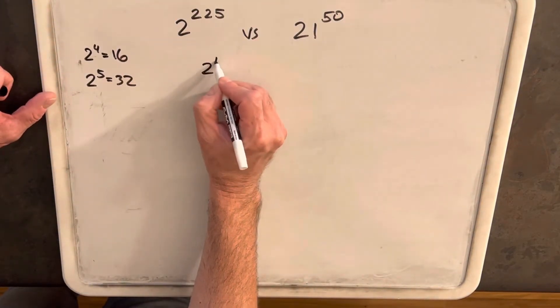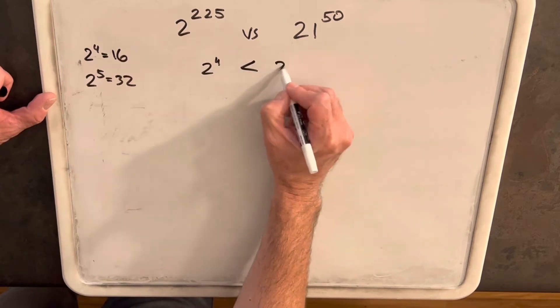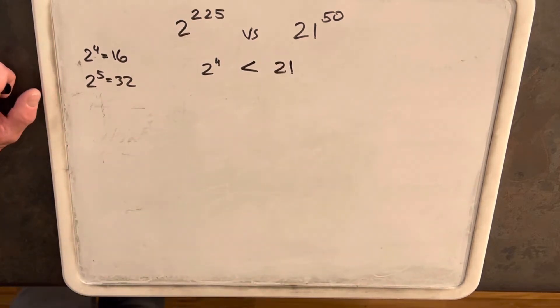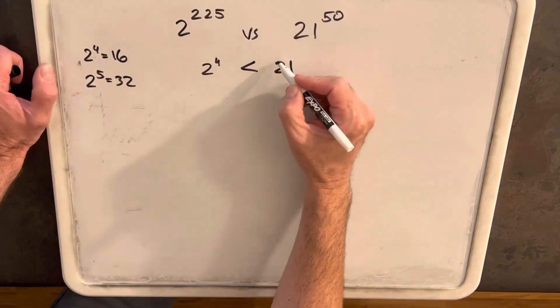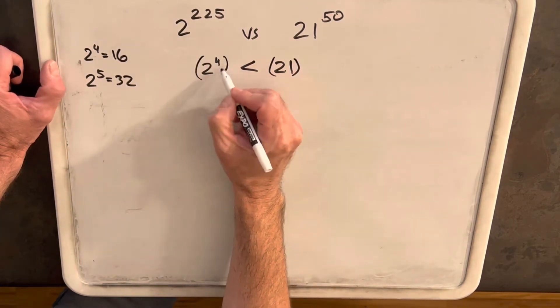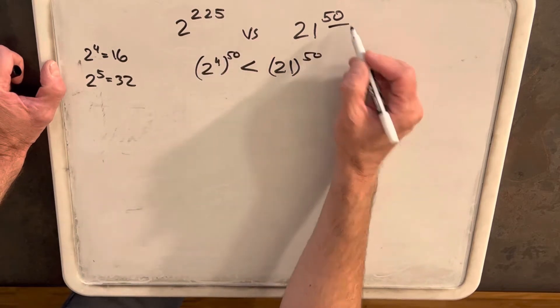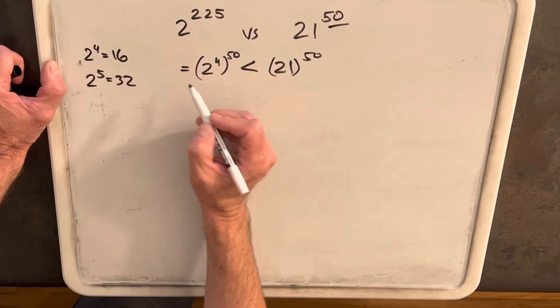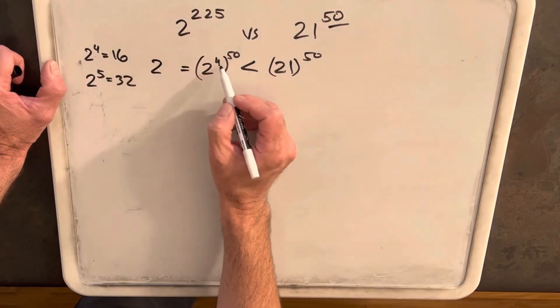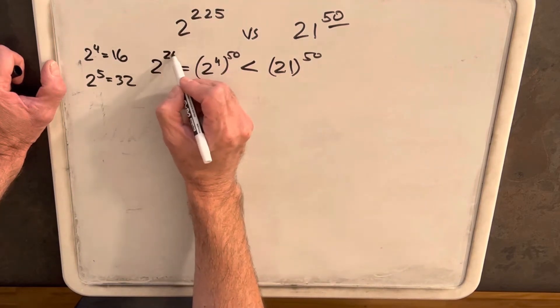So we know that 2 to the 4th is less than 21, so that gives us a starting point. Let's just raise each side to 50 because that will get us to match that exponent. So we know that 21 to the 50 is greater than 2 to the 4th to the 50, which is just 2 to the 200.